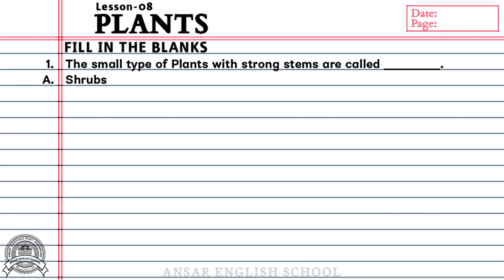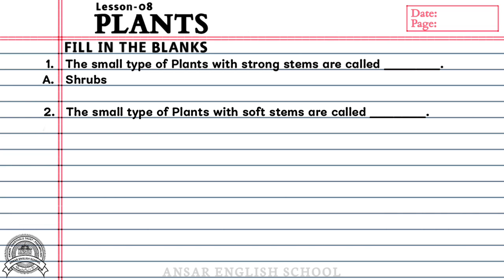Question number 2: The small type of plants with soft stems are called dash. Answer: Herbs.